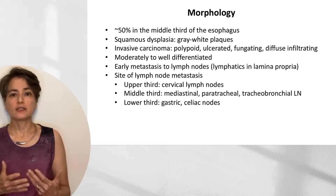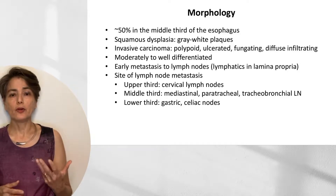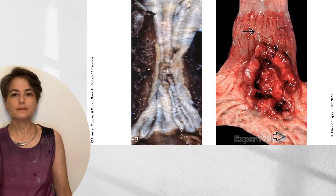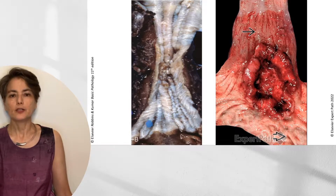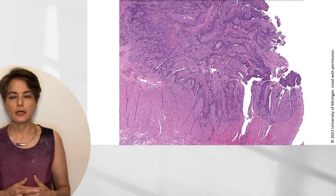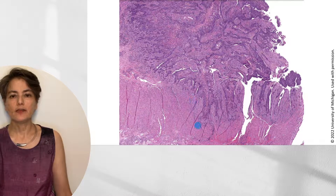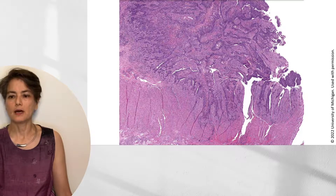Where squamous cell carcinoma metastasizes depends on location: upper third goes to cervical lymph nodes, middle third to mediastinal, paratracheal, and tracheobronchial nodes, and lower third to gastric and celiac nodes. Grossly, we have the squamous cell carcinoma in the middle third with a polypoid lesion showing squamous mucosa, contrasted with adenocarcinoma. Histologically at low power, we see a fungating mass, friable and necrotic at the top, invading deeply into the muscularis propria — indicating likely lymph node involvement.